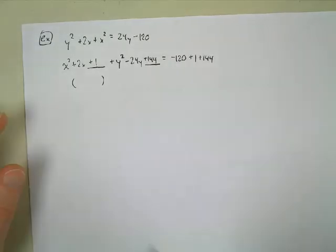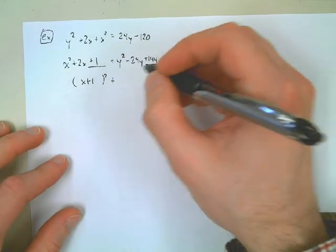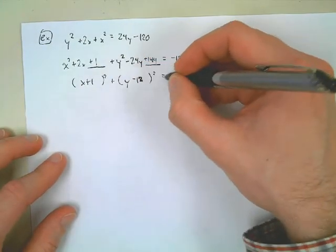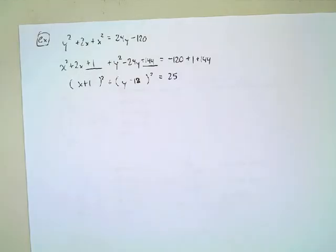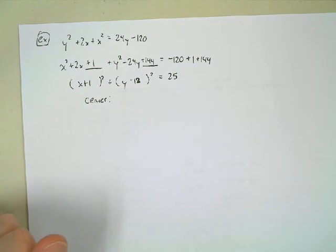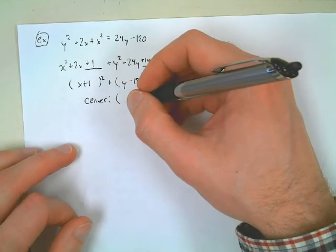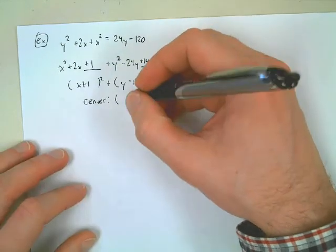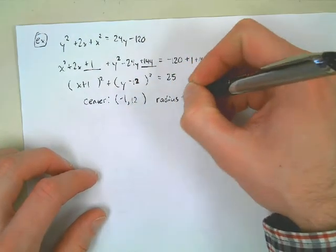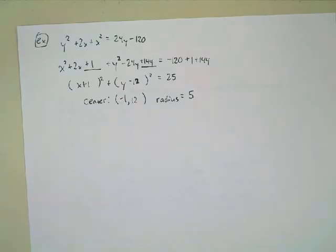Completing the square: x squared plus 2x plus 1 factors to x plus 1 squared. y squared minus 24y plus 144 factors to y minus 12 squared. Watch the sign — it's minus 12, not plus 12. That equals 25. So the center is negative 1, 12, and the radius is 5.